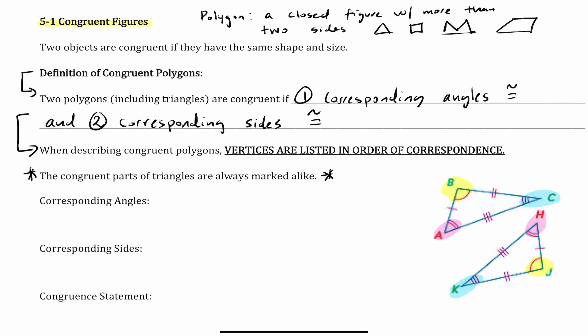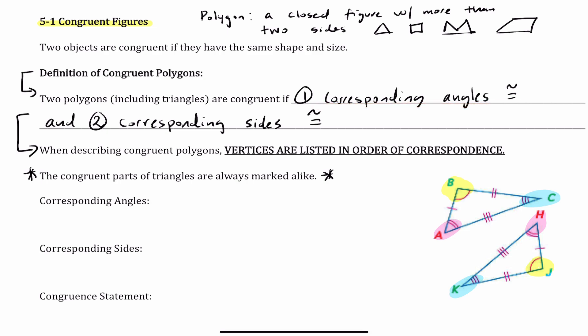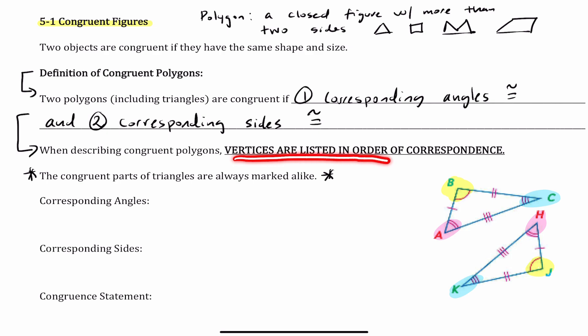The definition of congruent polygons: two polygons, including triangles, are congruent if, number one, the corresponding angles are congruent, and number two, the corresponding sides are congruent. When we describe congruent polygons, we need to list the vertices in order of correspondence.